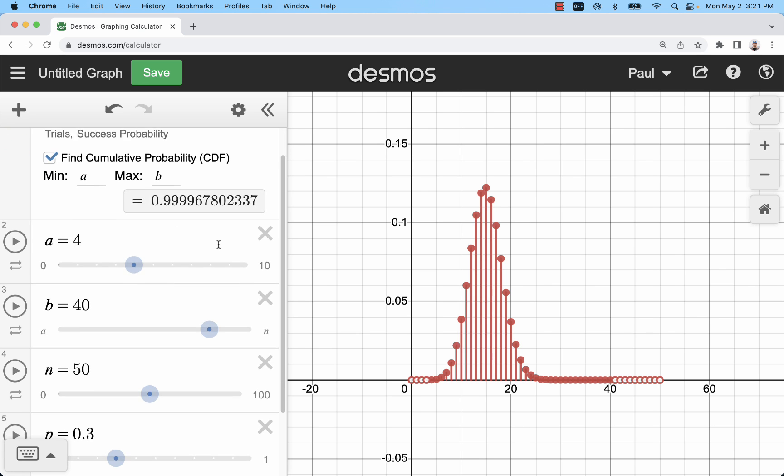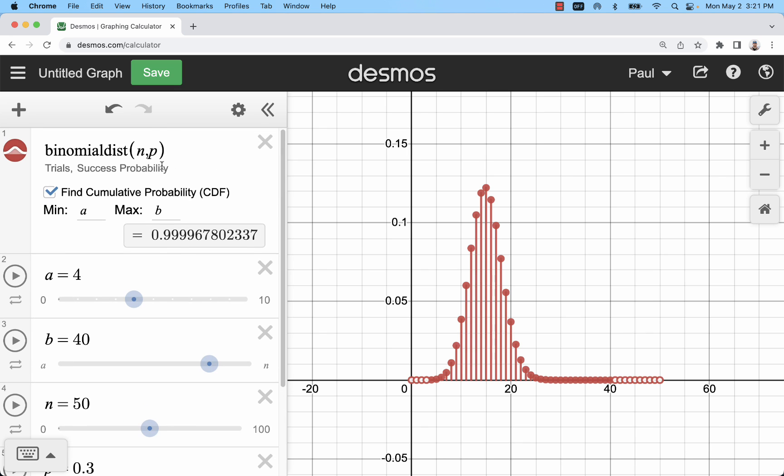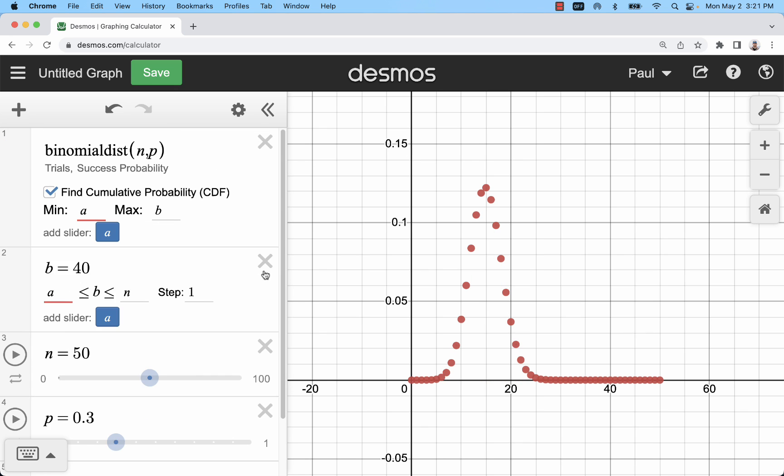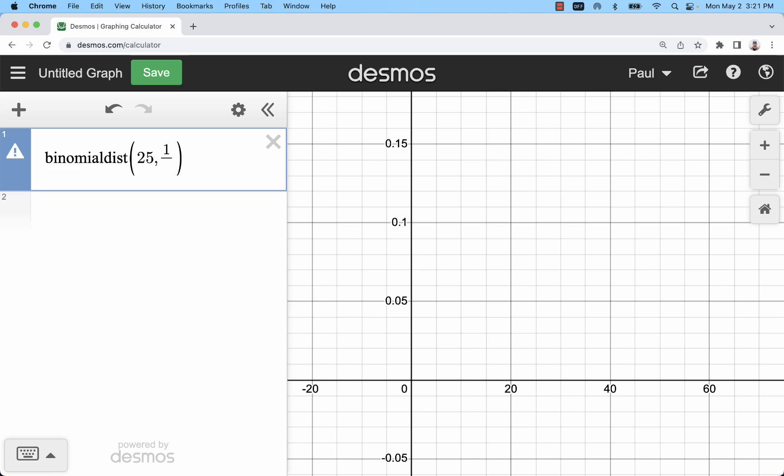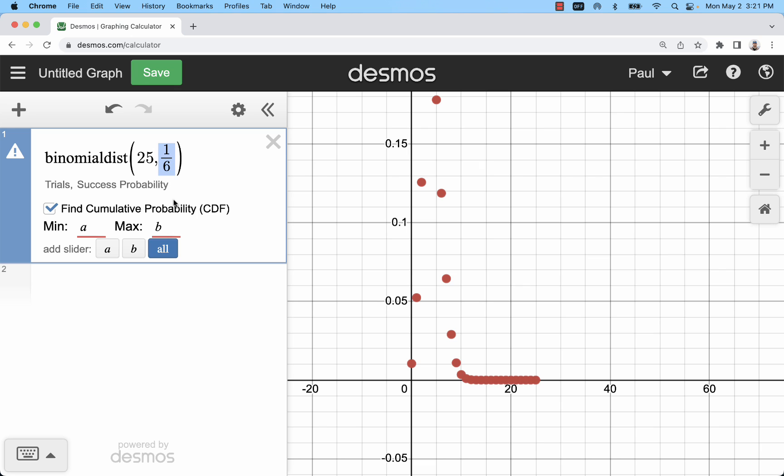Now, a couple other uses that you might have is if you want p to be a fraction. I'm going to go all the way back down to kind of the basic use of this, where I'm just typing in numbers. So let's say I have 25 rolls of a six-sided die. I can use a fraction in case the probability of success is something that doesn't round to a nice decimal. So here would be like the probability of rolling a 3. There's 1 in 6 probability of that.